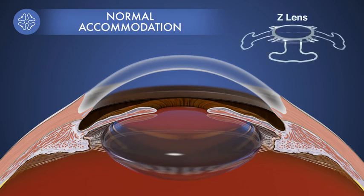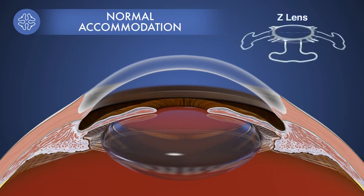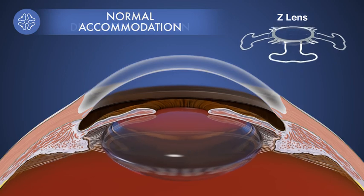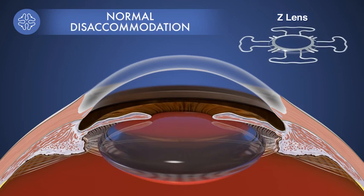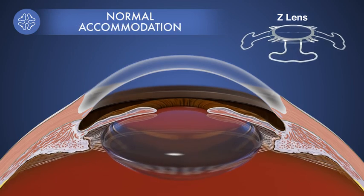Our Z-Lens intraocular lens is built to mimic this movement. In the Z-Lens resting state, the optic is vaulted forward by haptics that are angled backwards. As the ciliary body relaxes, zonules pull the haptics flat, moving the optic backwards. When the ciliary body contracts, the haptics vault the optic forward.